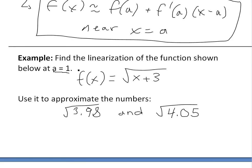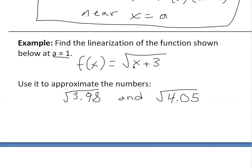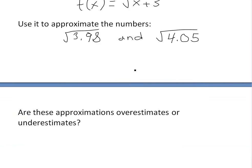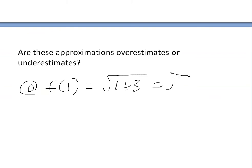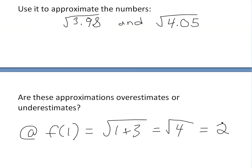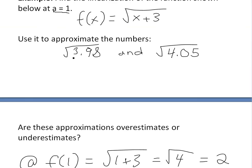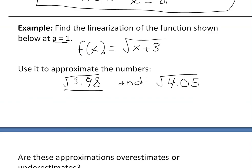First, let's get back to why a equals one. When we plug x equals one into the function, f(1) = √(1+3) = √4 = 2. We know the square root of four is just two, so we can use this known value to approximate numbers close to it, like 3.98 and 4.05.